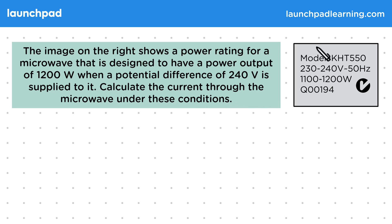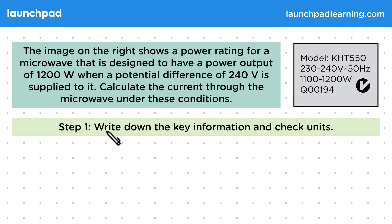Power ratings are used on components to show the range of potential difference and power that's safe to use. We need to keep below this potential difference and power range or it can become dangerous. For the first step, let's write down the key information and check the units.